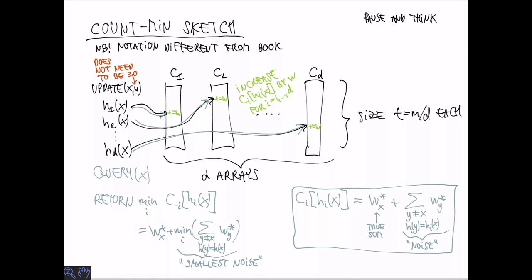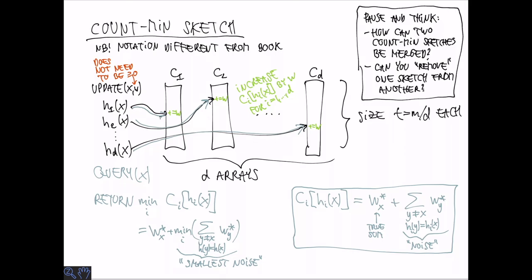So assuming that we are allowing negative updates, we are going to assume that the noise is not negative. Now before we go on I want you to think: how can we take two count-min sketches and merge them? Also can you remove one sketch from the other in the sense that if we know that all the elements that were inserted in one was also inserted in another, can you remove the contribution of the other sketch from the first one?